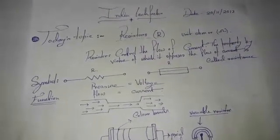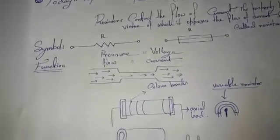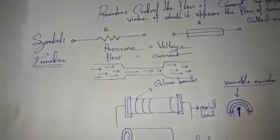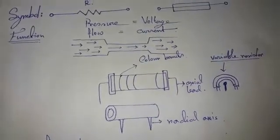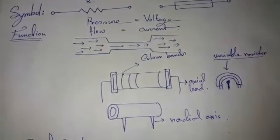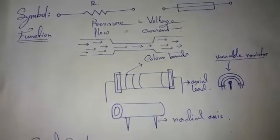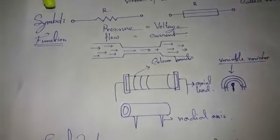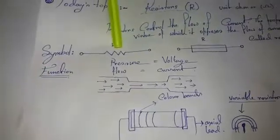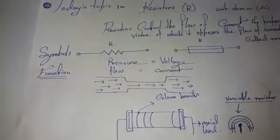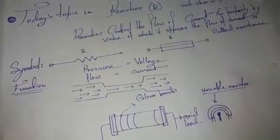A resistor can control the electronics device and control the current flow. This is the property — the property is the resistance. The property is that electrons are controlled. I can see the resistance in the symbol. There is a symbol for resistance.